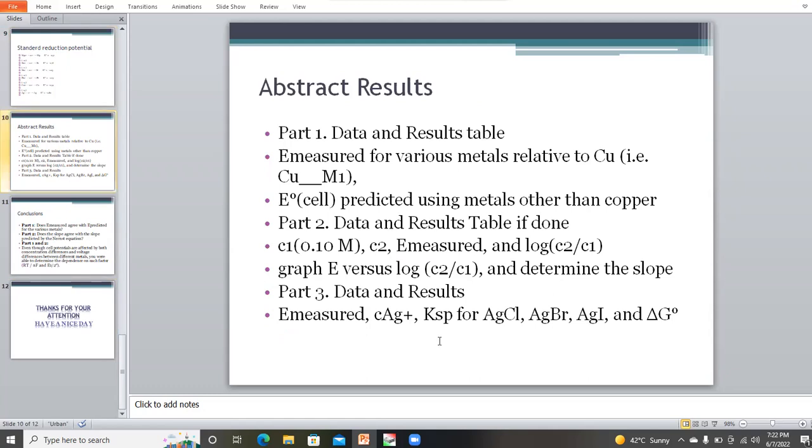Now we discuss what results we get from this experiment. Measurements for various metals relative to copper. E0 self-predicts using the metal other than copper. Part 2: Data and charge table. C1 is 0.10 molar, C2, and log C2 by C1.